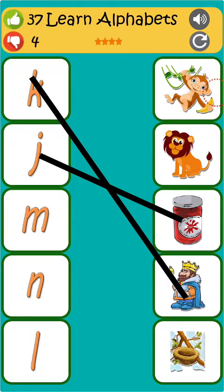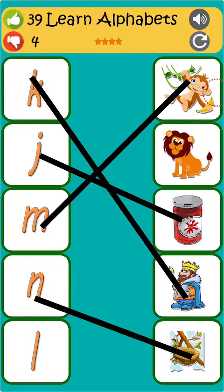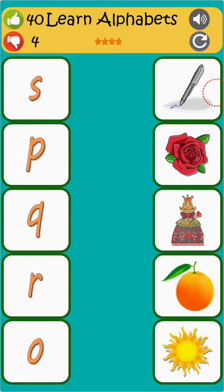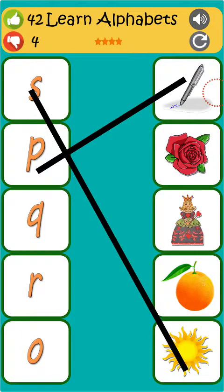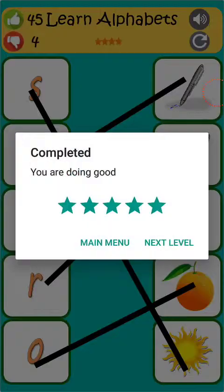J is for jam. M is for monkey. N is for nest. L is for lion. P is for pen. Q is for queen. R is for rose. O is for orange.